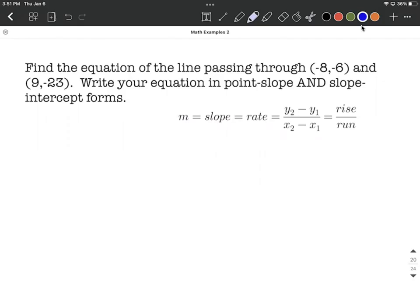So the first thing we need for either one of these forms is we need the slope of our line. I've gone ahead and written out our equation for the slope. M is our slope. It's also sometimes referred to as the rate, or we have this nice formula, y2 minus y1 over x2 minus x1. We use the rise over run more so if we're trying to graph it, or if we're given a graph and trying to locate the slope.